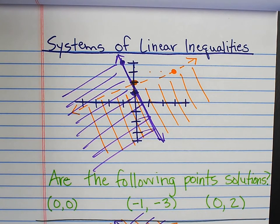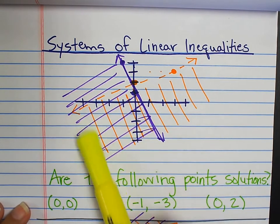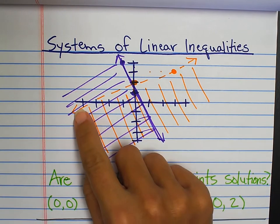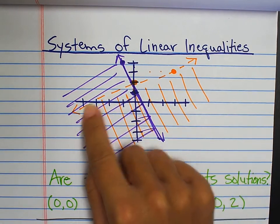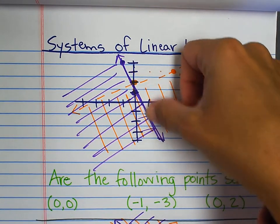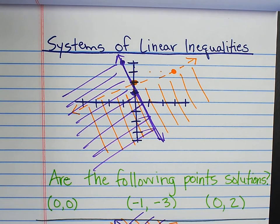We have now practiced graphing systems of linear inequalities, and we have discussed extensively that the solution to a linear inequality is the double shaded region. Every single point that lands in the double shaded region is a solution to that system of inequalities. We've discussed the fact that if it lands on the dotted line, it is not part of the solution, but if it lands on a solid line, it is part of the solution.